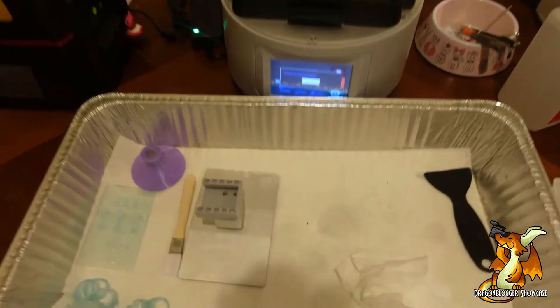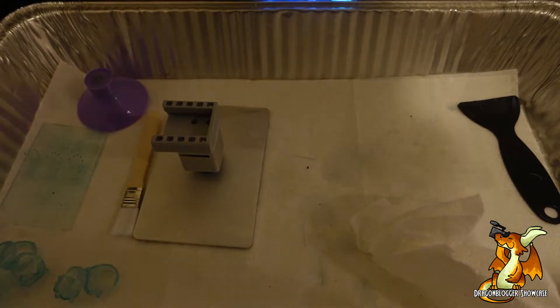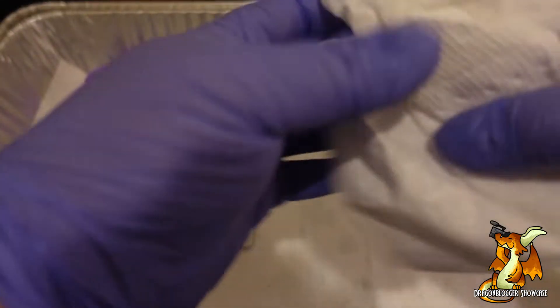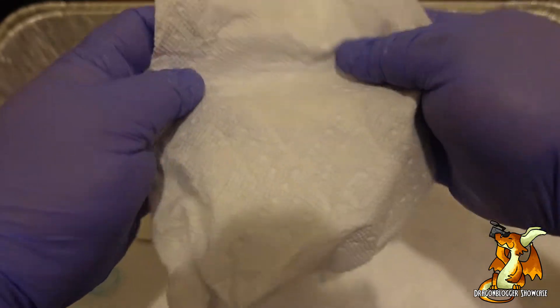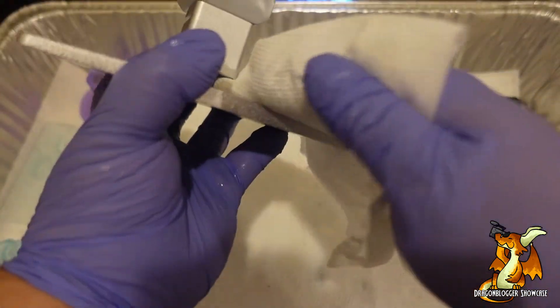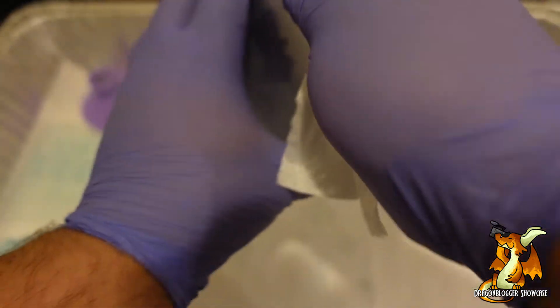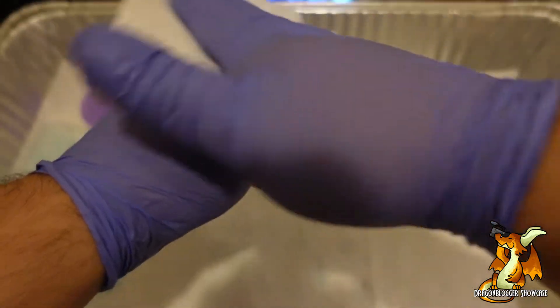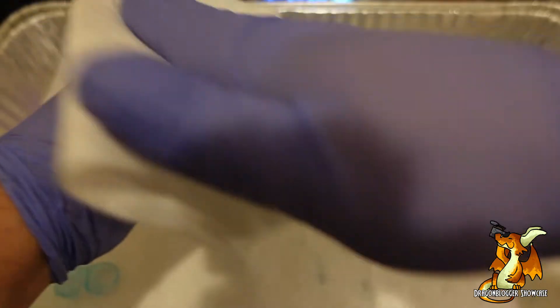Next thing is your build plate itself. This paper towel that I used to wipe up that alcohol, I'm going to go ahead and use that to wipe up the excess resin off the top and across the build area.